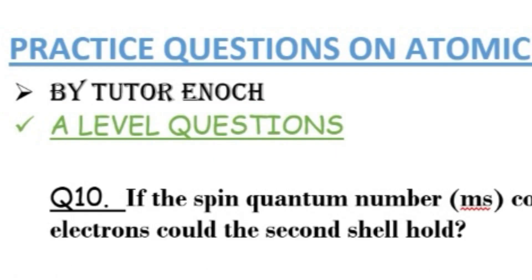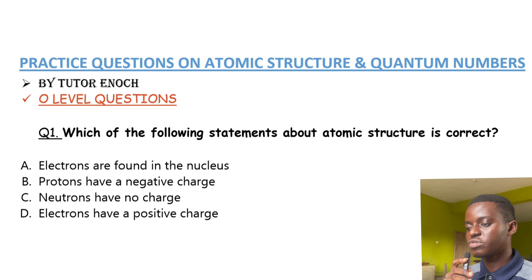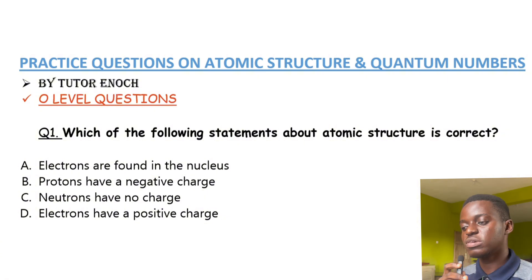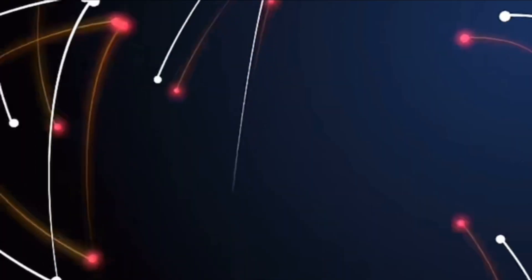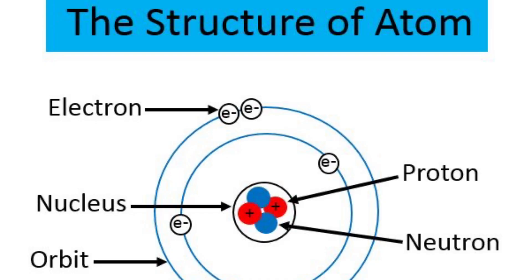The questions are divided into O-level and A-level. Question one says: which of the following statements about atomic structure is correct? Option A: electrons are found in the nucleus. Option B: protons have a negative charge. Option C: neutrons have no charge. Option D: electrons have a positive charge. Electrons are negatively charged particles that revolve around the nucleus. The nucleus is composed of protons and neutrons — protons are positively charged and neutrons have no charge.